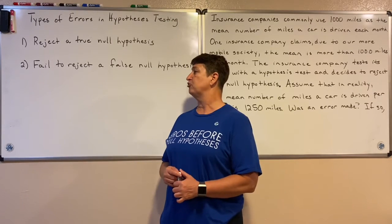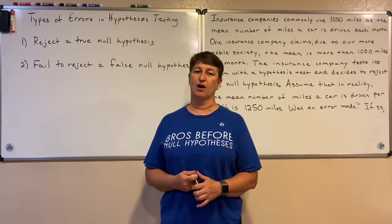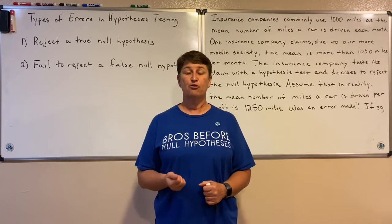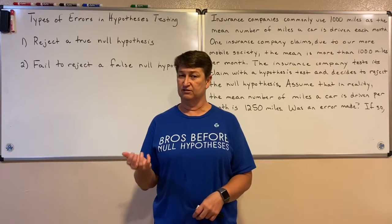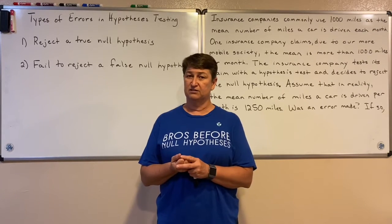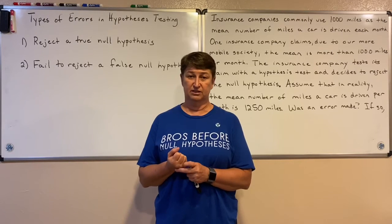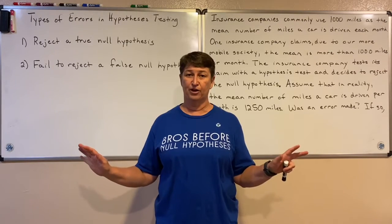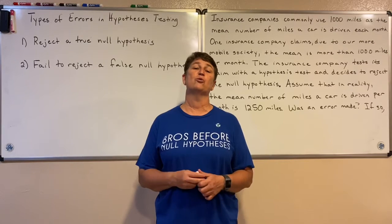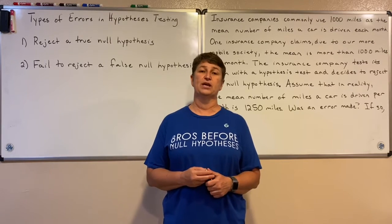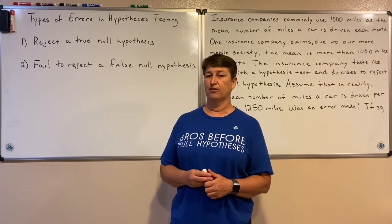A Type 2 error is to fail to reject a false null hypothesis. We go out and get our test statistic, and that test statistic is not statistically significant — it's not way out there. It's near the mean of that distribution where we think it should be, and so therefore we fail to reject a false null hypothesis.